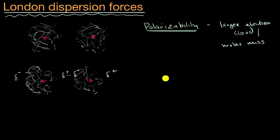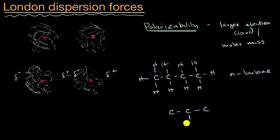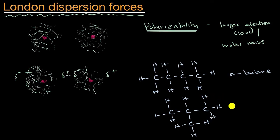For example, butane can come in two different forms. There's n-butane, which has four carbons and 10 hydrogens in a straight chain. And then there's isobutane, which has three carbons in the main chain and one carbon that breaks off the middle carbon — a more compact, branched structure. If you had a sample of n-butane versus isobutane, which would have a higher boiling point? Pause the video and think about that.